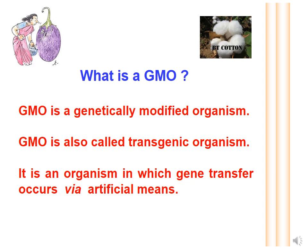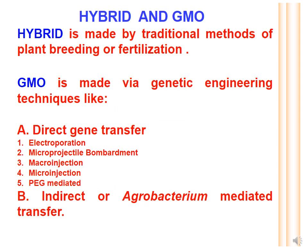Let's discuss the difference between a hybrid and a GMO. A hybrid is a plant or animal made by traditional methods of breeding or fertilization, while a GMO is made by artificial methods of gene transfer using genetic engineering techniques, which can lead to direct or indirect gene transfer.